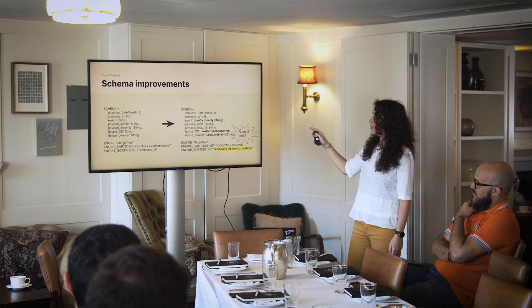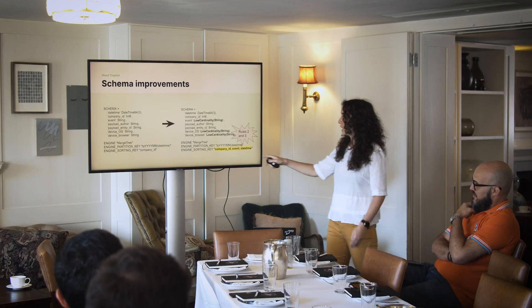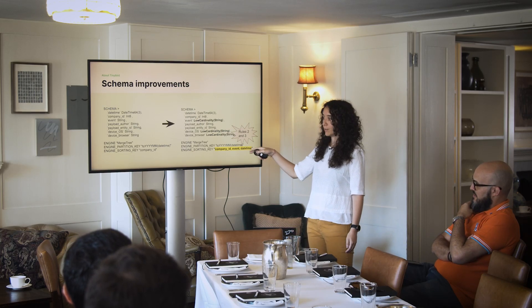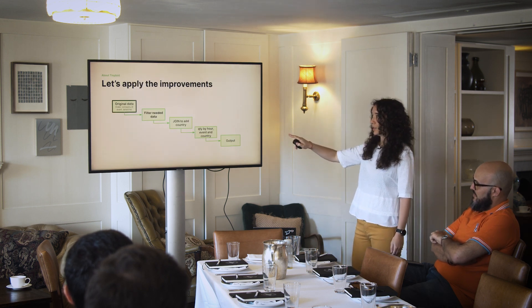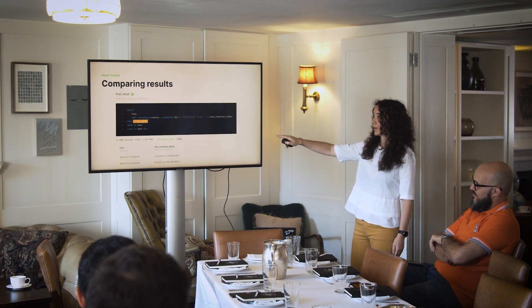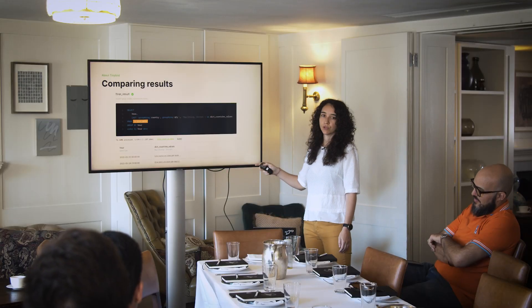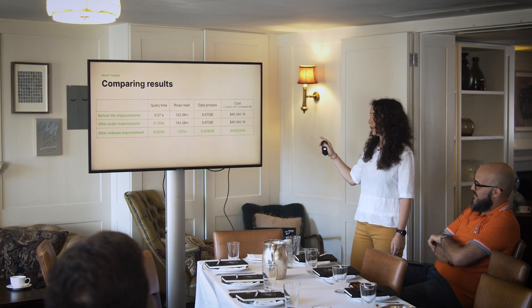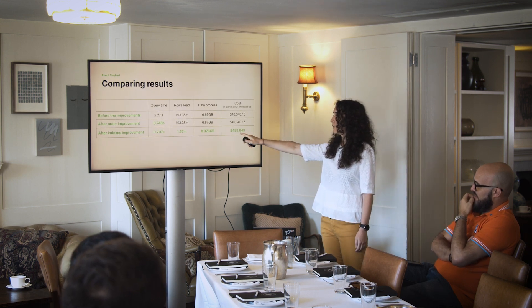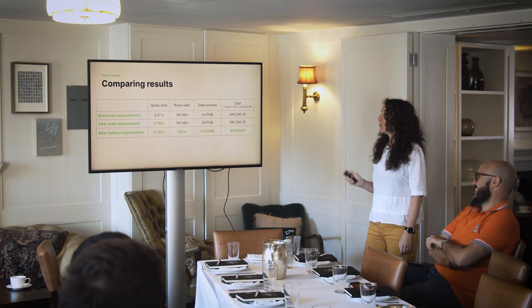Based on rules two and three, we should always filter first based on the indexes and have the data sorted by the queries we are going to perform. In this case, we should add the event and the date to the sorting key because we were filtering based on that. Just by changing this schema, the query was then processing 76 megabytes and reading 1.67 million rows, with the query time reduced to 0.2 seconds. The cost associated to the query was now around $460 per day — a great improvement from $40,000 per day.